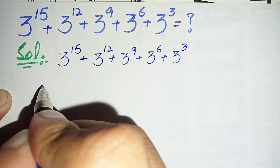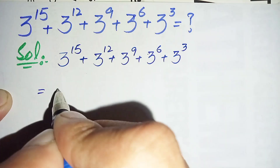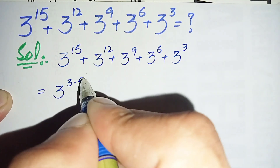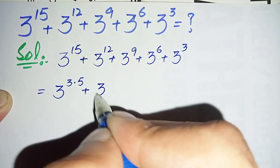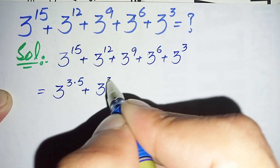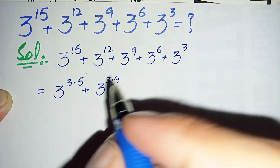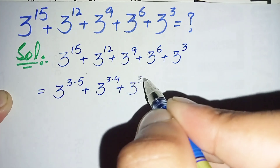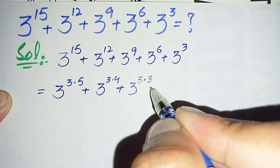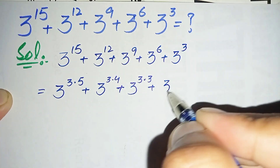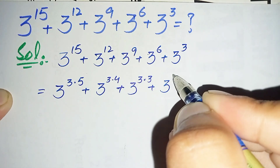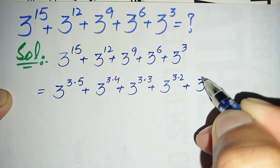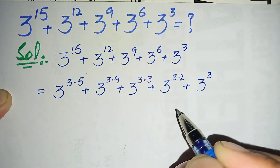We will factorize all of these powers as a protocol of 3 times another number. So 3 to the power 15 is the same as 3 times 5, plus 3 to the power 12 is 3 times 4, plus 3 to the power 9 is 3 times 3, plus 3 to the power 6 is 3 times 2, plus 3 to the power 3.